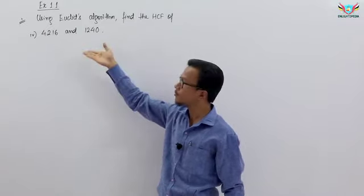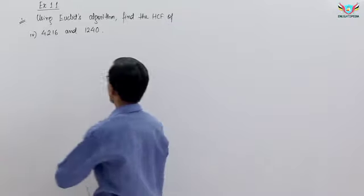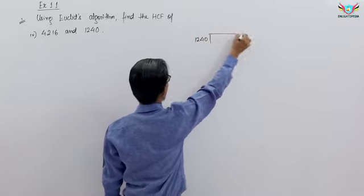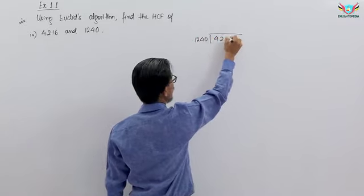So we will divide by the side here. Let me divide 1240 and divide by the side here, it is 4216.